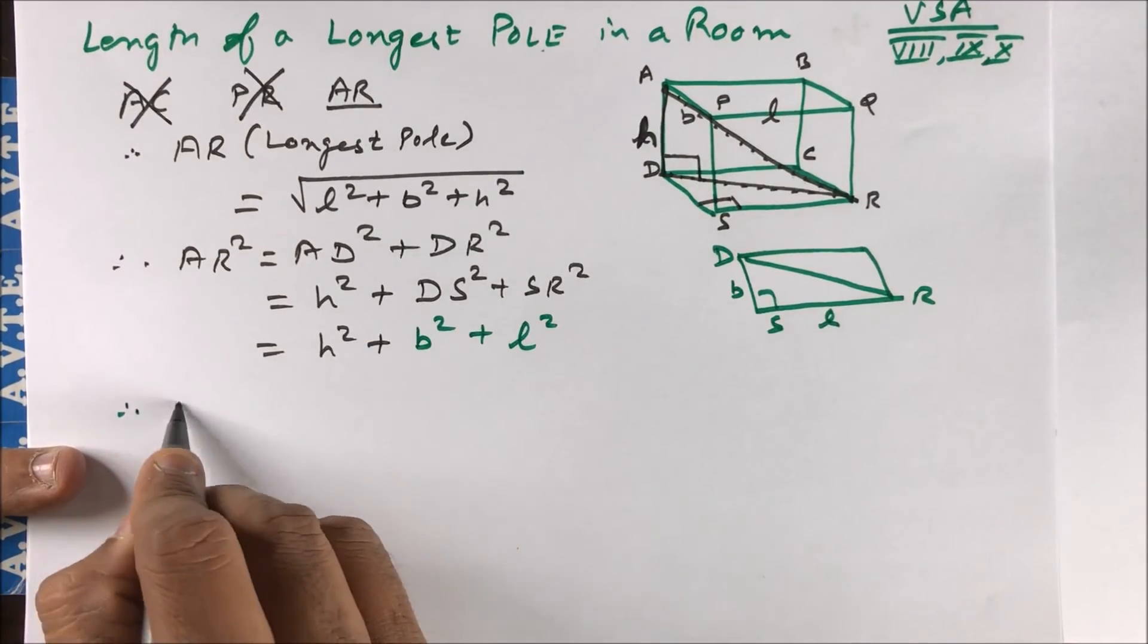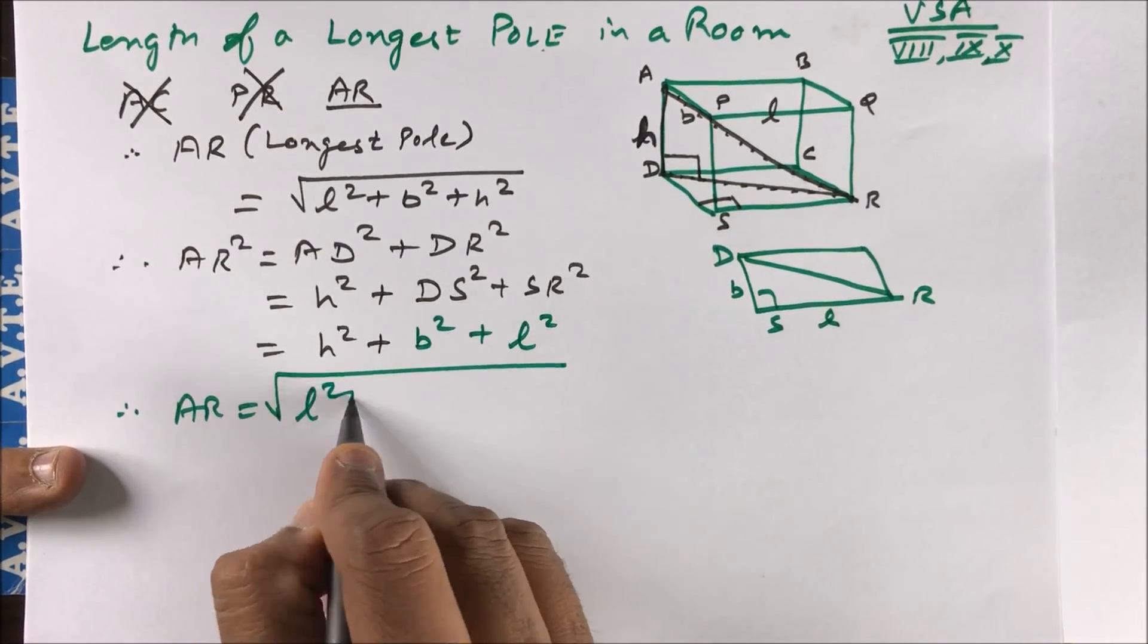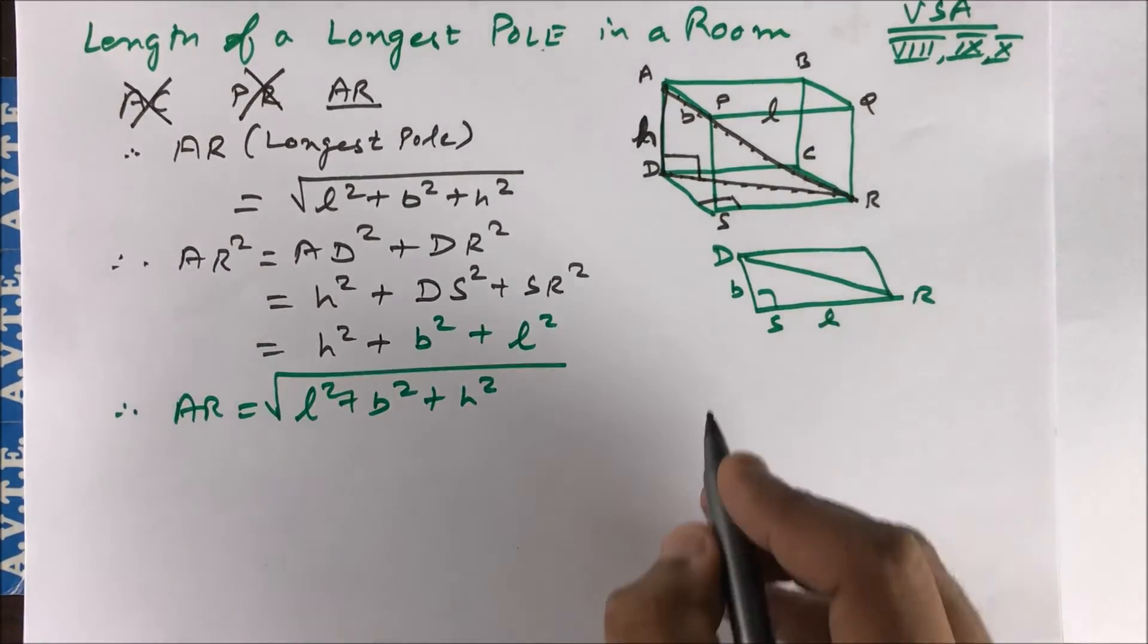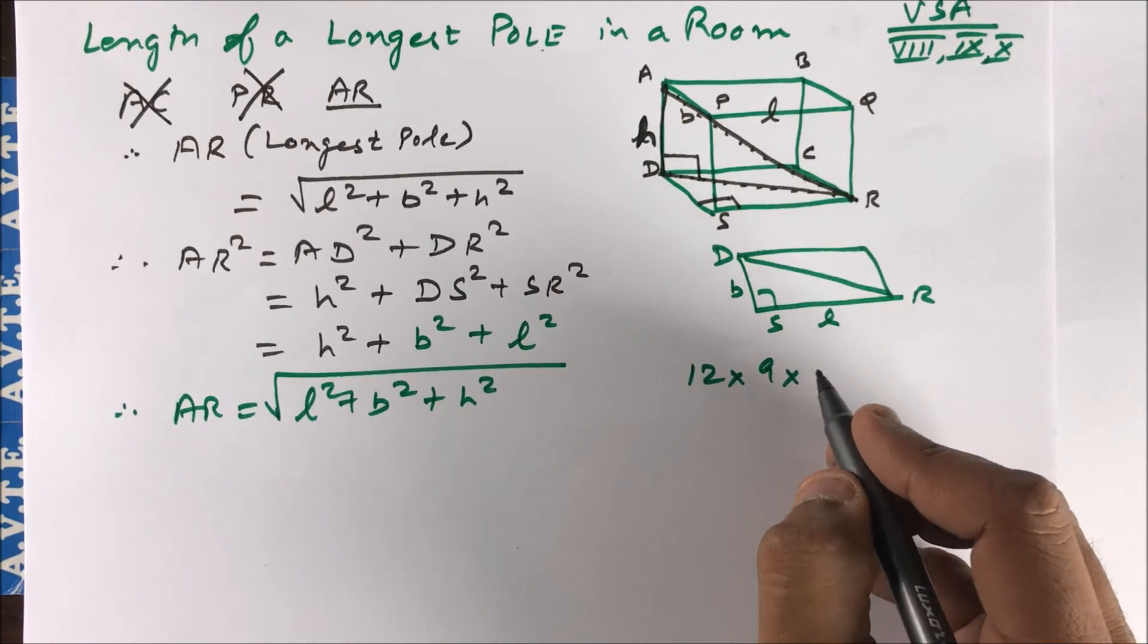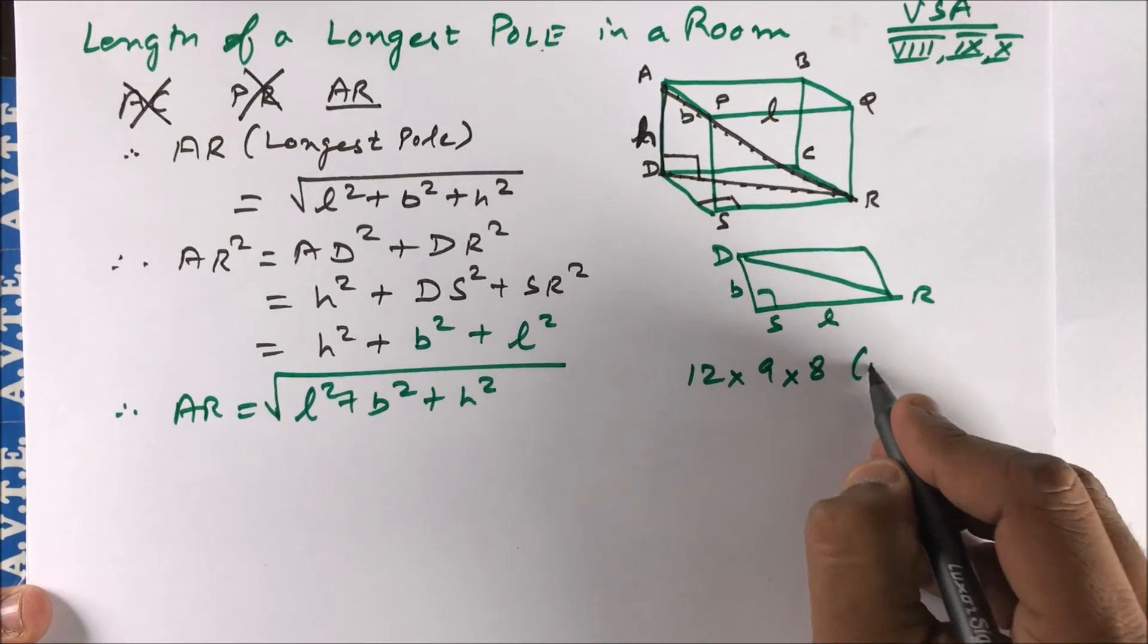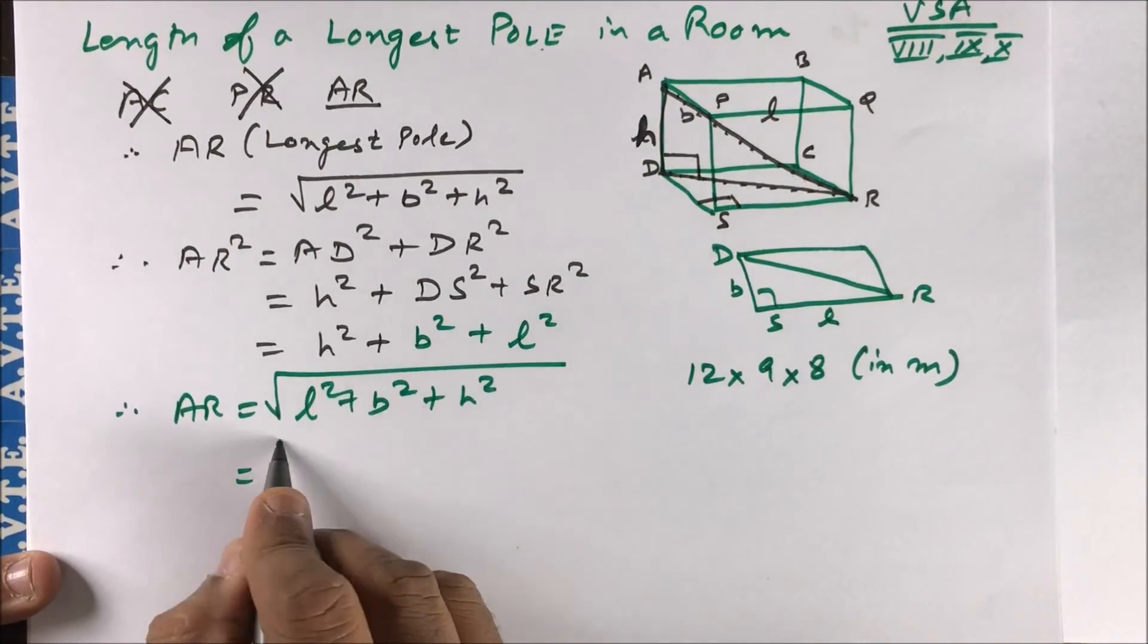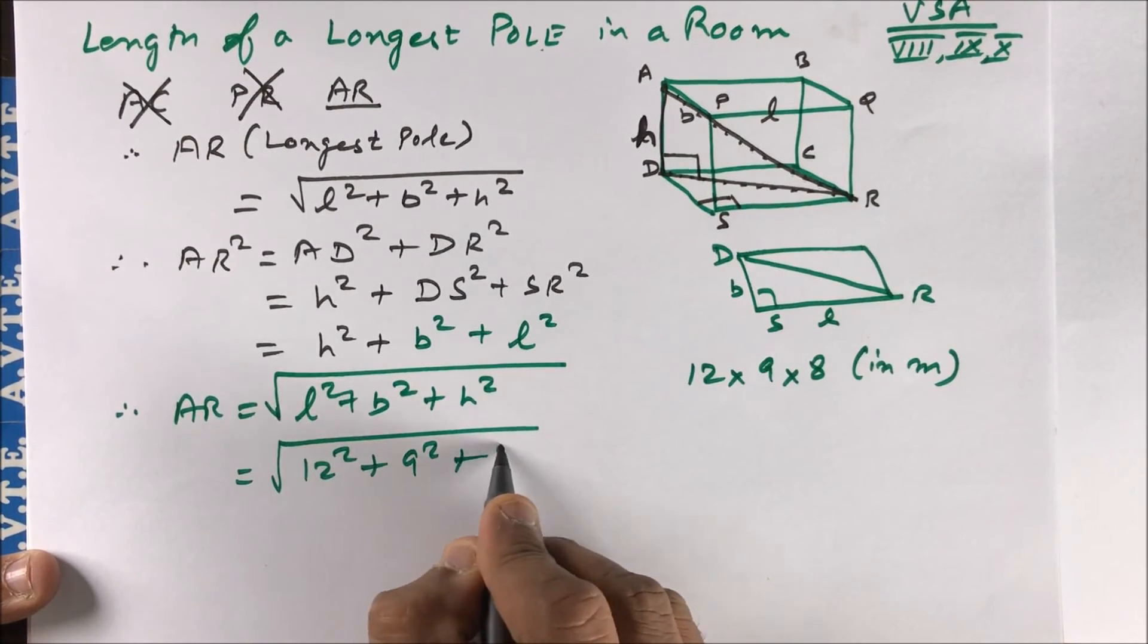So you have AR as L square plus B square plus H square. Suppose we have a room of 12 cross 9 cross 8 in meters. So what is the length of the longest pole? That is 12 square plus 9 square plus 8 square.